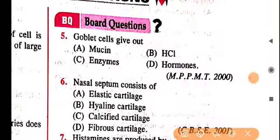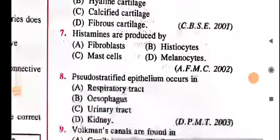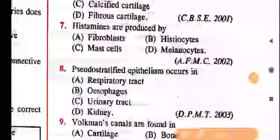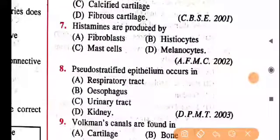Question 5: goblet cells secrete mucin. I hope you already knew that — I mentioned it earlier. Next: the nasal septum consists of hyaline cartilage, as mentioned before.